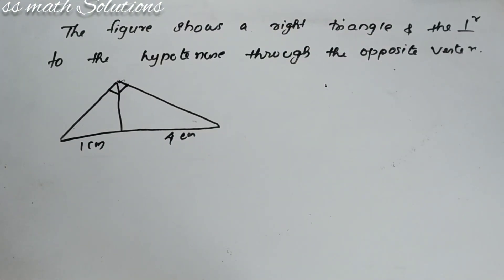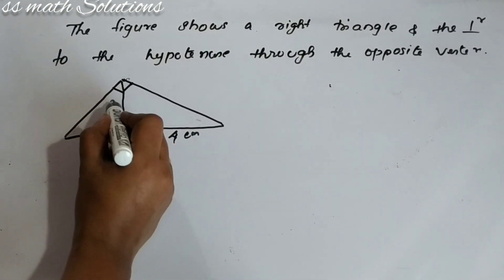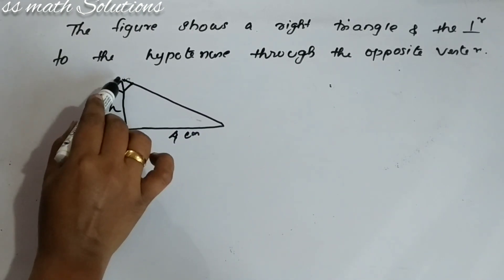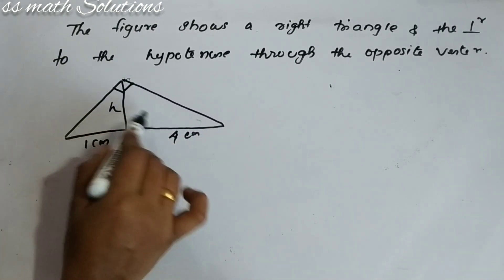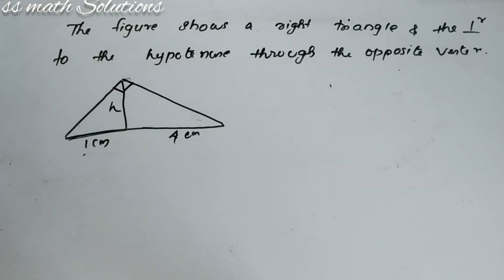Here is our next question. The figure shows a right triangle and the perpendicular to the hypotenuse drawn through the opposite vertex. We need to find the area of this triangle. This is the right triangle; the hypotenuse is H. When we draw the perpendicular, it divides the hypotenuse into two parts: 1 centimeter and 4 centimeter.